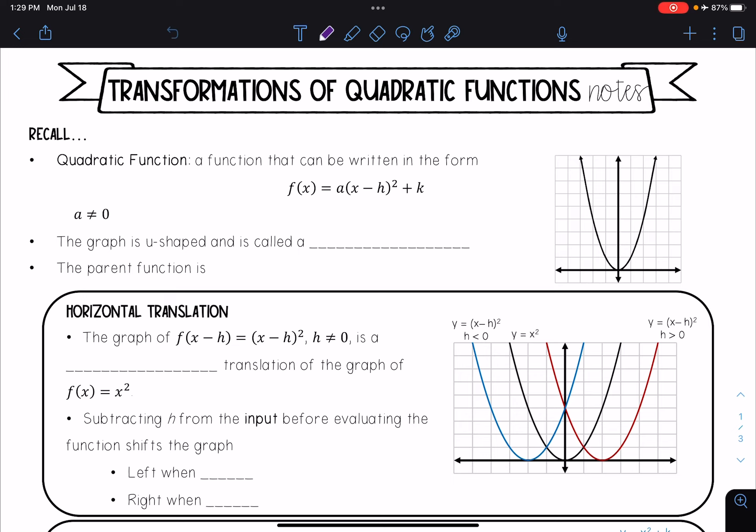So if you recall, a quadratic function is a function that can be written in the form f(x) = a(x - h)² + k, where a does not equal zero.